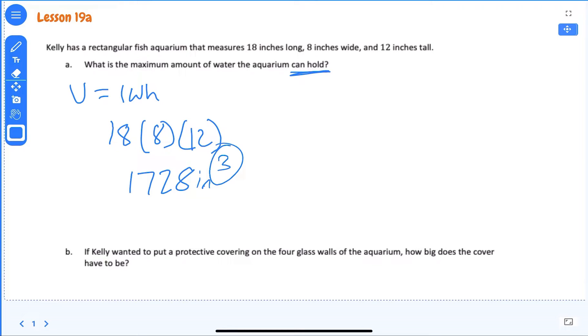Now if Kelly wanted to put a protective covering on the four wall glasses, remember we've already done a question like this where there's only four. We don't have all six sides covered. How big will the cover have to be? Well, let's just draw this aquarium real quick.